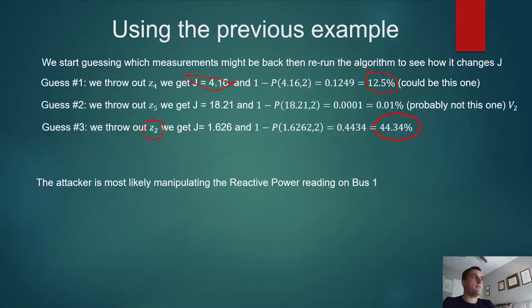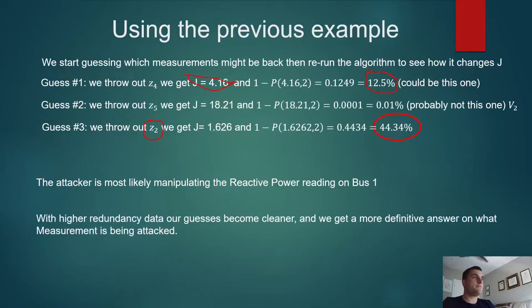This tells us that the attacker was most likely manipulating the reactive power reading on bus 1. With higher redundancy again and cleaner data, we get a more definitive answer on what the measurement is that is being attacked.